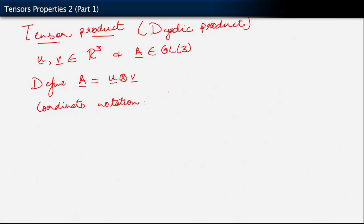So in coordinate notation, the way we write that out is A_ij equals u_i v_j. Now, of course, A is a tensor. And if we had another vector there, A would act upon that vector. So let's consider what happens there.